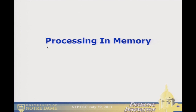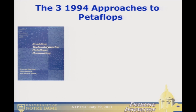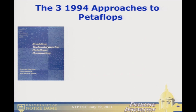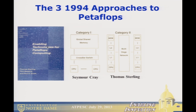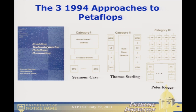Now I'll get to what I was supposed to talk about: processing in memory. In 1994, Paul was one of the organizers of a workshop in Pasadena on getting to a petaflop. Three architectures were proposed as targets. Seymour projected a big shared memory machine without cache coherency — he really didn't believe in caches. Tom Sterling projected what became clusters of commodity microprocessors networked together. And I proposed a category of machines where you had just a single part-type with memory and logic together — these scaled, and went by the name PIM, or Processing in Memory.